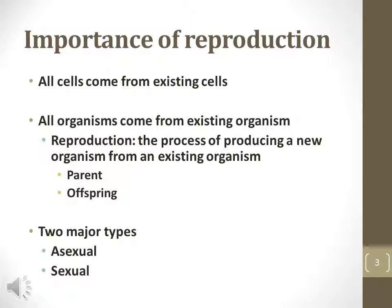On the other hand, reproduction could be a much more complex process of multicellular eukaryotes, humans included, producing male and female gametes or sex cells. Gametes differ from other parent cells because they contain only one copy of each chromosome, while other cells contain two copies. A zygote is formed when two gametes come together, and it contains two sets of chromosomes.